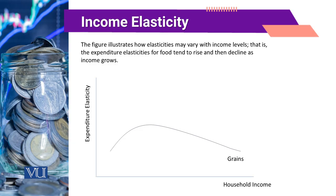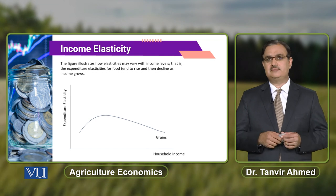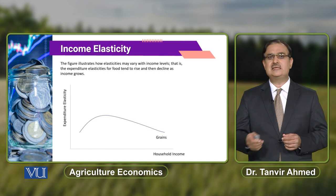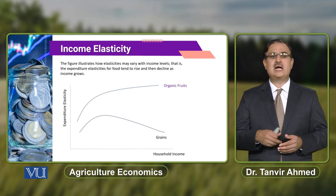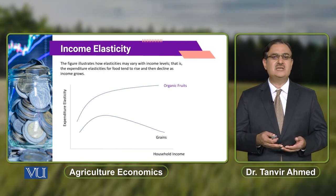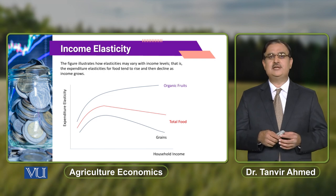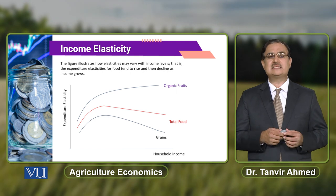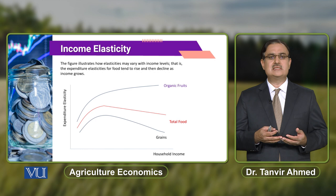This diagram shows what is the impact of household income on expenditure elasticity. With reference to Engel's curve, usually as household income increases, expenditure elasticity initially increases, reaches a certain threshold level of income where it is maximum, and then starts decreasing. Similarly, when we discuss this with reference to organic fruits, with the increase in household income expenditure elasticity for organic food fruits increases, but as a whole, as far as expenditures on food are concerned, initially with the increase in income expenditure elasticity increases, then reaches a maximum point and then again starts decreasing.